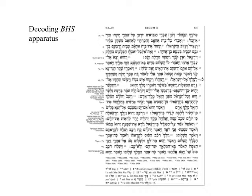The present purpose is to work on how to decode the apparatus of the BHS, and we're going to work on an example from 2 Kings chapter 9 for the student who would like to follow along in their copy of the BHS. The particular example we're going to look at relates to what appears to be an accidental scribal variation or an error.